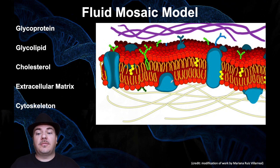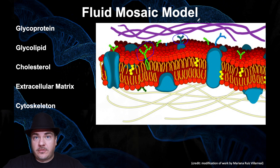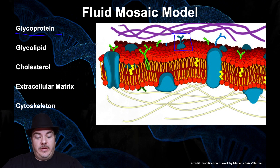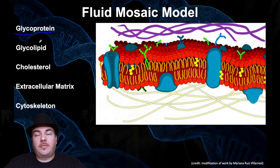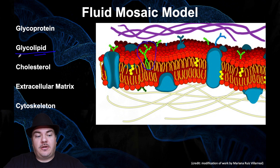Besides phospholipids and proteins, there are other things that make up your membrane. For example, carbohydrates can be attached to your membrane — represented by the little green and blue structures in the figure. Carbohydrates can be found stuck on a protein, which is called a glycoprotein — a protein with a carbohydrate attached to it. Or carbohydrates can be attached to a lipid, in which case it's called a glycolipid — a lipid with a carbohydrate attached to it.